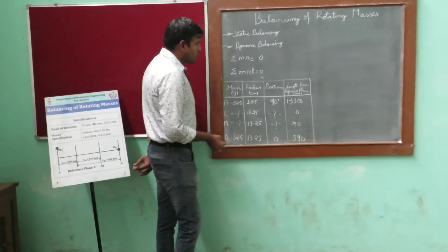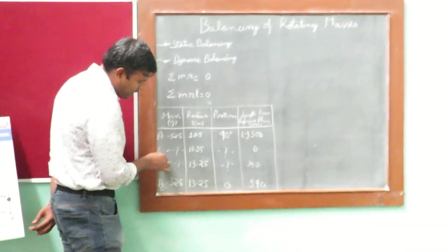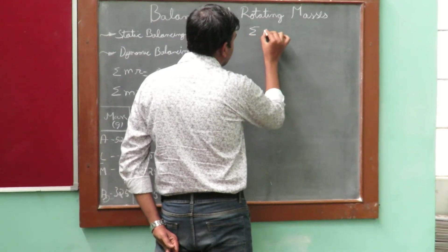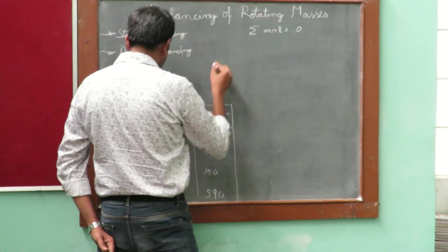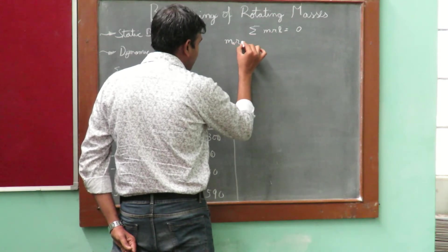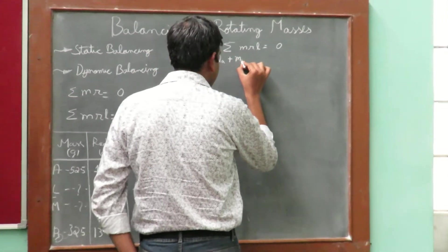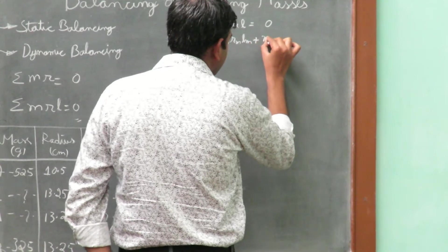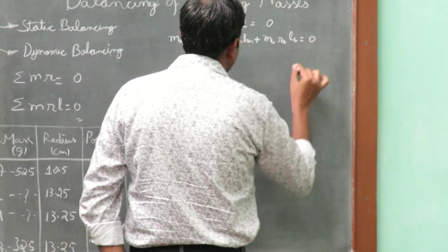So we will solve the problem. When we take the bending moment about the reference plane L, for the system to be in equilibrium, the sum of moments about L should equal zero: MA·RA·LA + MM·RM·LM + MB·RB·LB = 0. The length LA here will be negative because we are taking the bending moment. We know the values of MA, MB, RA, RM, and RB, and the unknown is MM.